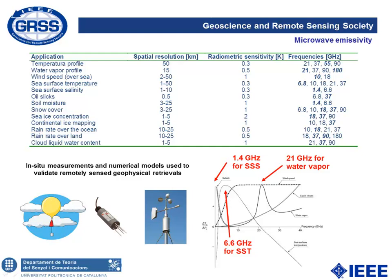To name a few applications, we can get vertical profiles of atmospheric temperature and water vapor, wind speed and direction over sea, sea surface temperature and salinity, oil slicks, soil moisture, snow cover, sea ice concentration, continental ice mapping, rain rate over ocean and land, and cloud liquid water content. These retrievals are validated using in-situ measurements and numerical models, including radiosoundings, soil moisture probes, and anemometers.